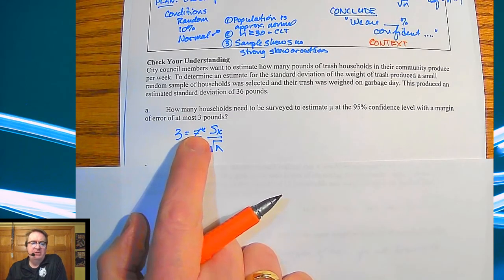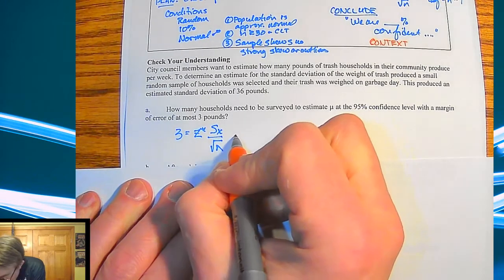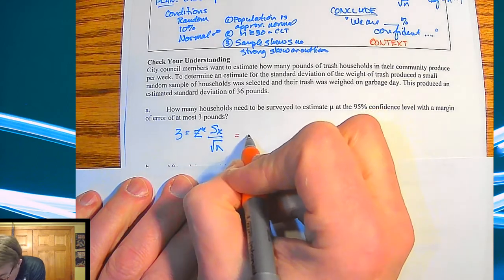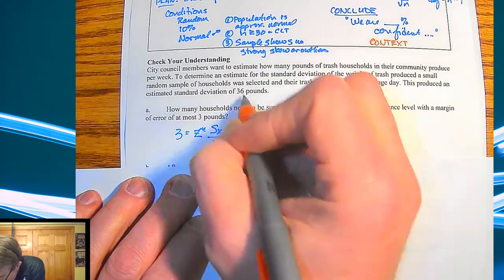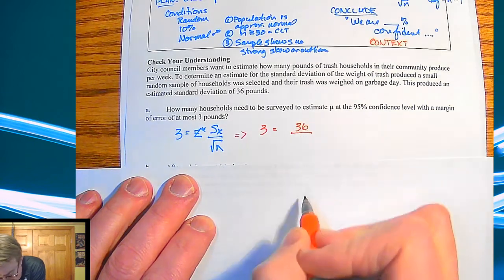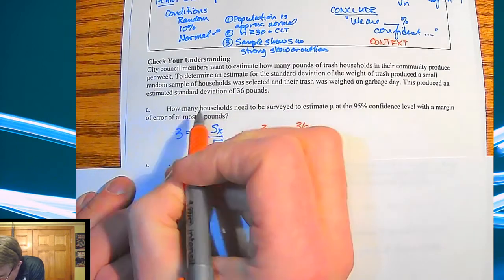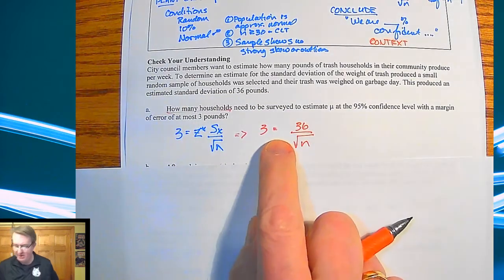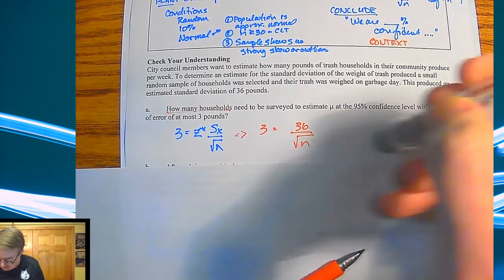How many households need to be surveyed to estimate the mean at 95% level with a margin of error at most three pounds? So notice here, we've done problems like this back when we were doing margin of error. So we've got three pounds there. We know it's going to be Z star times my standard error over square root of n. So we know some of these. Three is going to be here, standard deviation is 36. I'm trying to find the square root of n because we're trying to see how many households.